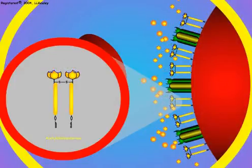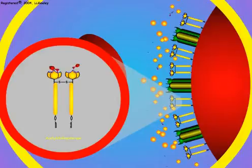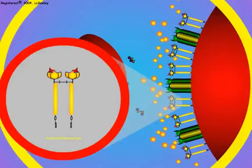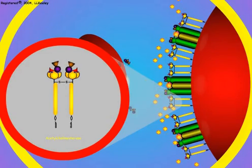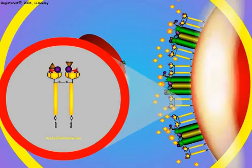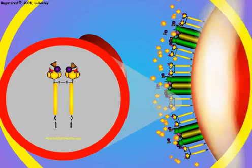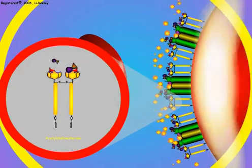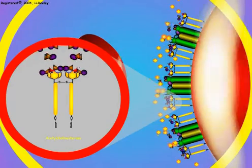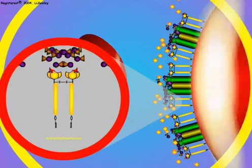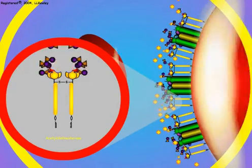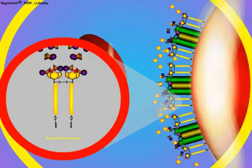Let us see the difference in acetylcholinesterase when an insecticide is present. We will use an organophosphate that binds irreversibly in our illustration, but the same is true for any insecticide that binds to the enzyme's active site. The persistence of acetylcholine causes sustained depolarization of postsynaptic neurons and continuous firing of nerve impulses that overload all of the nervous functions of the body and result in death of the organism.